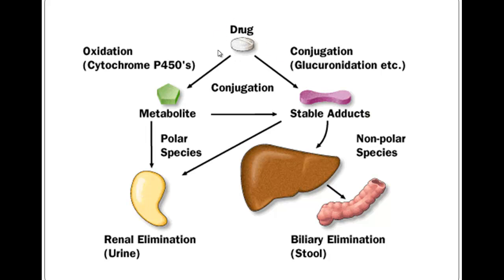When a drug is introduced to the body, it can be oxidated by the cytochrome P450, or the phase one type of metabolism, to make a metabolite that is usually more polar and can be eliminated in the urine through the kidneys. Or it can undergo a phase two type metabolism, which usually is some kind of conjugation like glucuronidation, that makes another metabolite that often is too large to be eliminated by the kidneys. If it's not small enough or if it's nonpolar, it may undergo active transport to be eliminated via the bile into the biliary system and then dumped back into the intestine and eliminated through the feces.